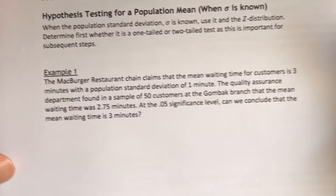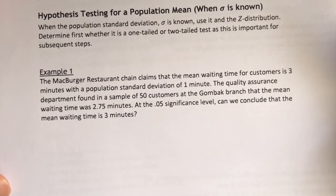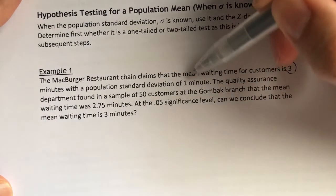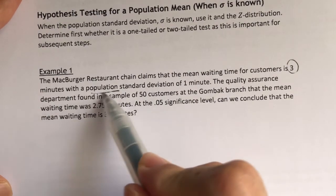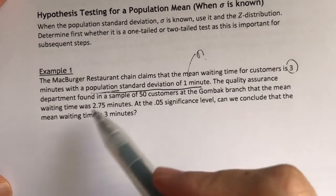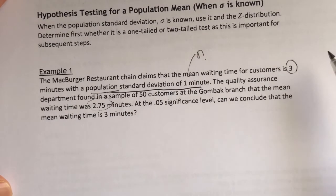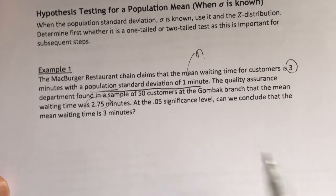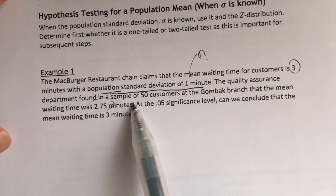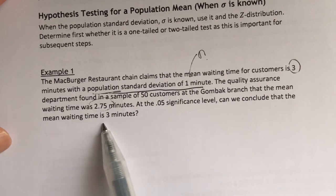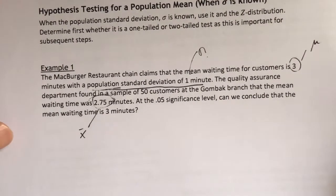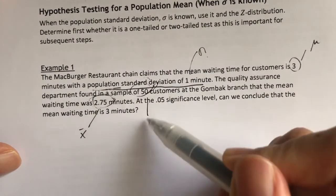First things first, let's identify what we have from the question. They've given us 3 minutes, which is the population mean mu. They've also given us the population standard deviation sigma — so sigma is known. They also give us 2.75 minutes. Which one is mu and which one is x-bar? Since the question says 'in a sample of 50 customers, the mean waiting time was', that means 2.75 is x-bar. Therefore, 3 minutes is mu. And 50 here is n, the sample size.